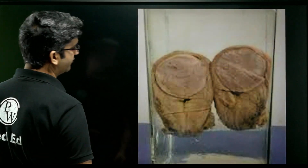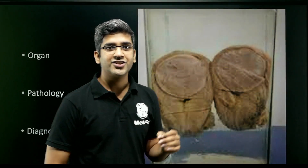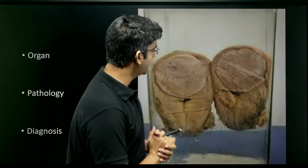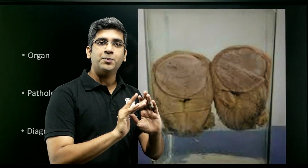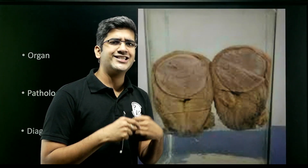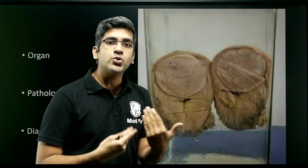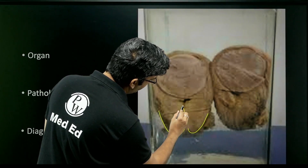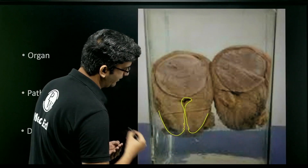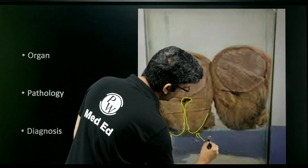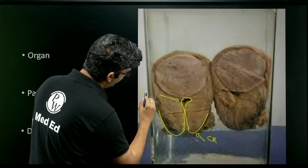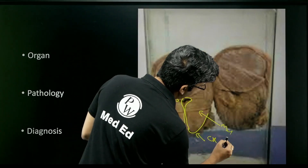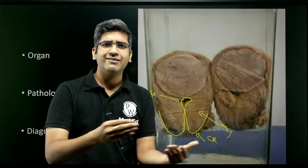Same routine for this specimen: describe the organ, tell the abnormality, and give the most probable diagnosis. This organ appears to be a cut-open or bivalved specimen of a uterus — a hysterectomy. How do we say it's a uterus? At the lower end you can see the cervical canal, and going up you have the endometrial cavity. The overlying outer part is the cervix, then the endometrial cavity, and the myometrium surrounding it.